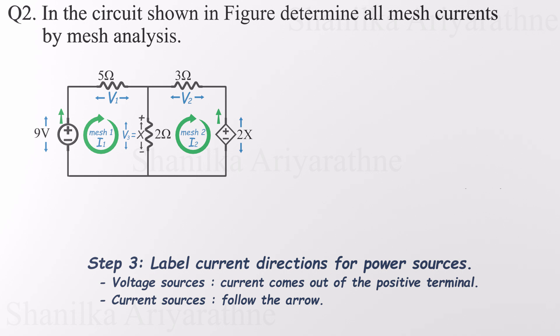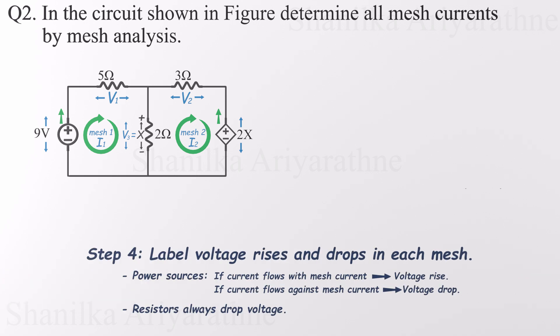Now let's identify the voltage rises and drops based on our mesh current directions. For power sources, here's the rule. If the current flows with the mesh current, it's a voltage rise. If it flows against it, it's a voltage drop. Resistors, on the other hand, are always voltage drops. No exceptions. Starting with mesh one, the current through the voltage source flows in the same direction as the assigned mesh current. So that's a voltage rise. The resistors, as always, cause voltage drops.